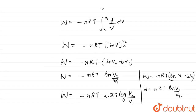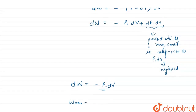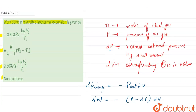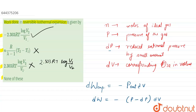Looking at the options given: option 1 is minus 2.303RT log(V2/V1) — yes, this is correct. Option 2 involves T2 minus T1 — no. Option 3 is 2.303RT log(V2/V1) — no, it should be V1/V2. Option 4 is none of these — incorrect. So our correct answer is option number 1. Thank you.